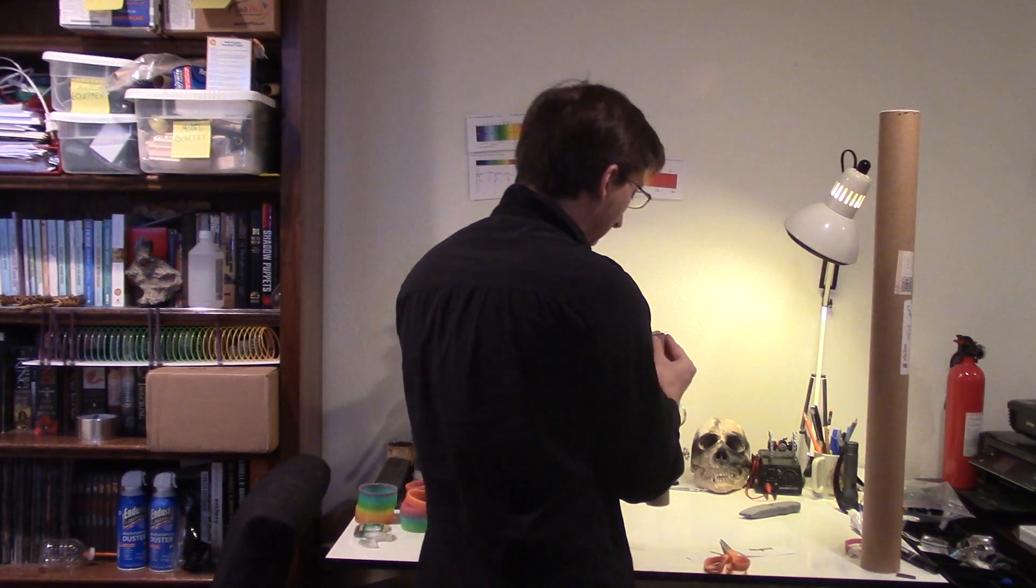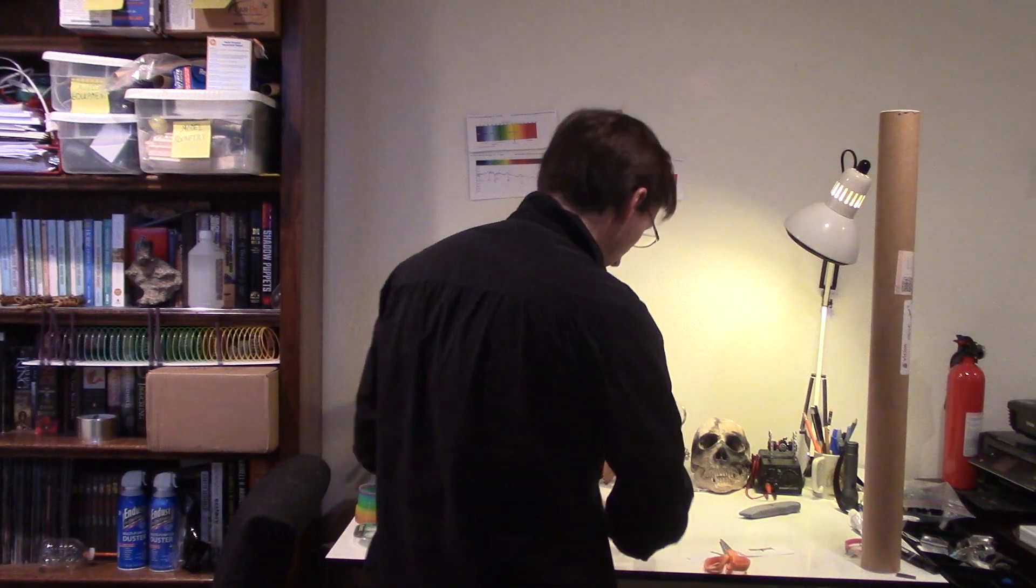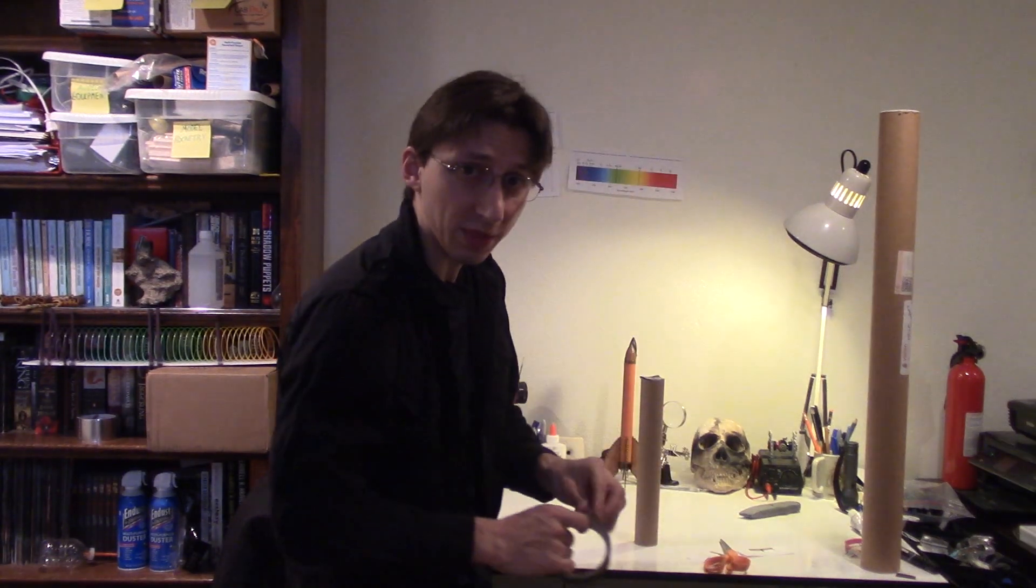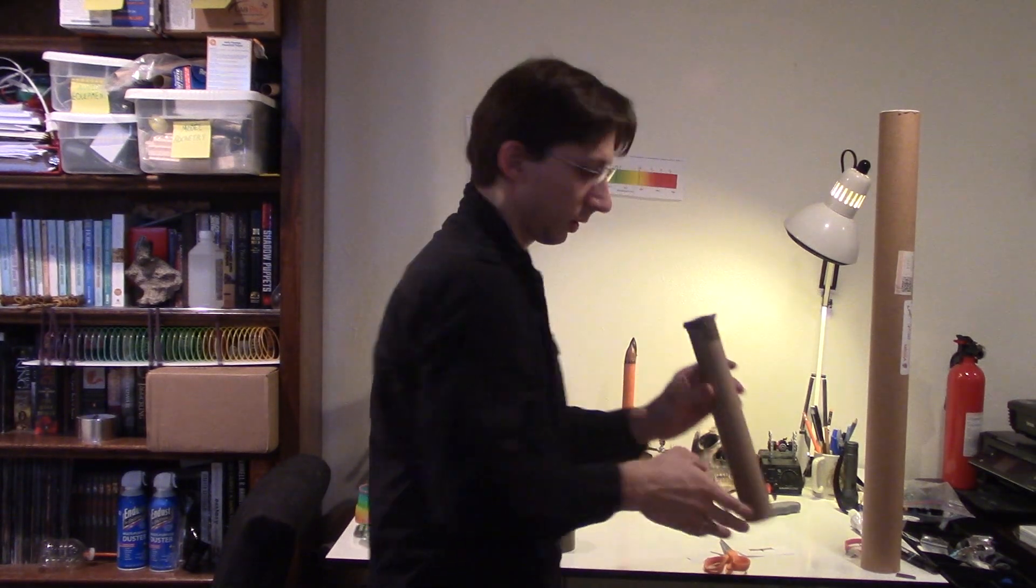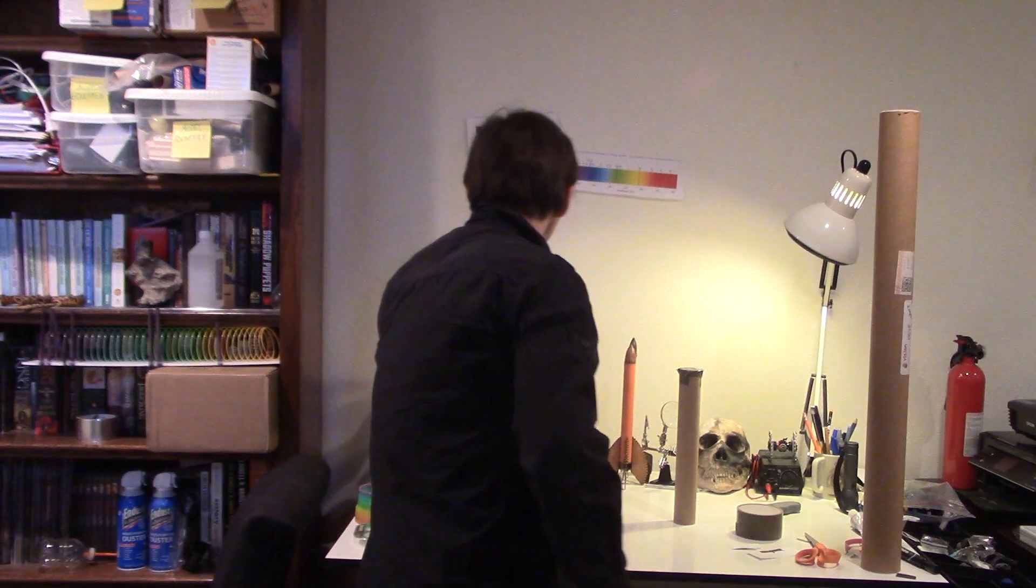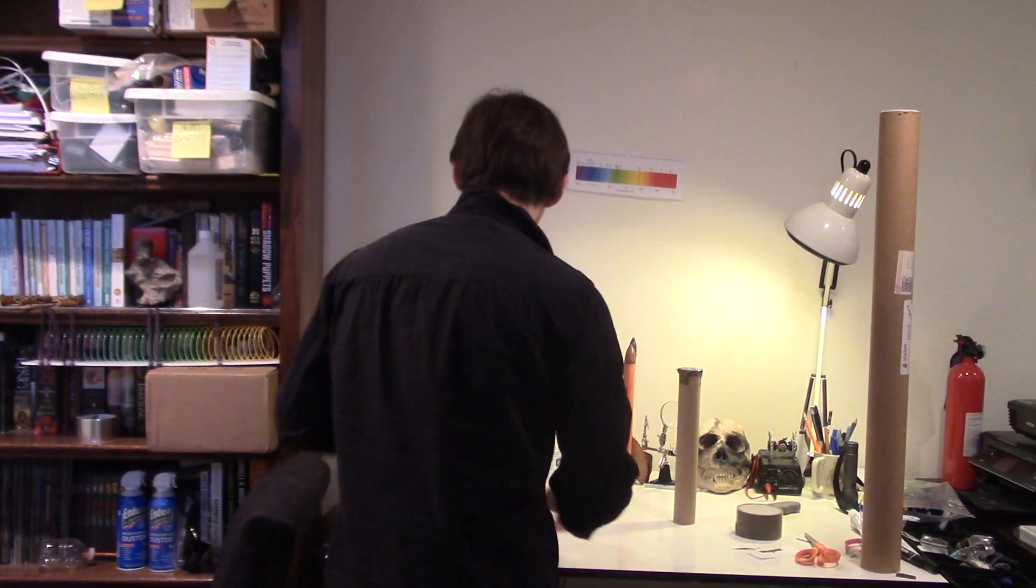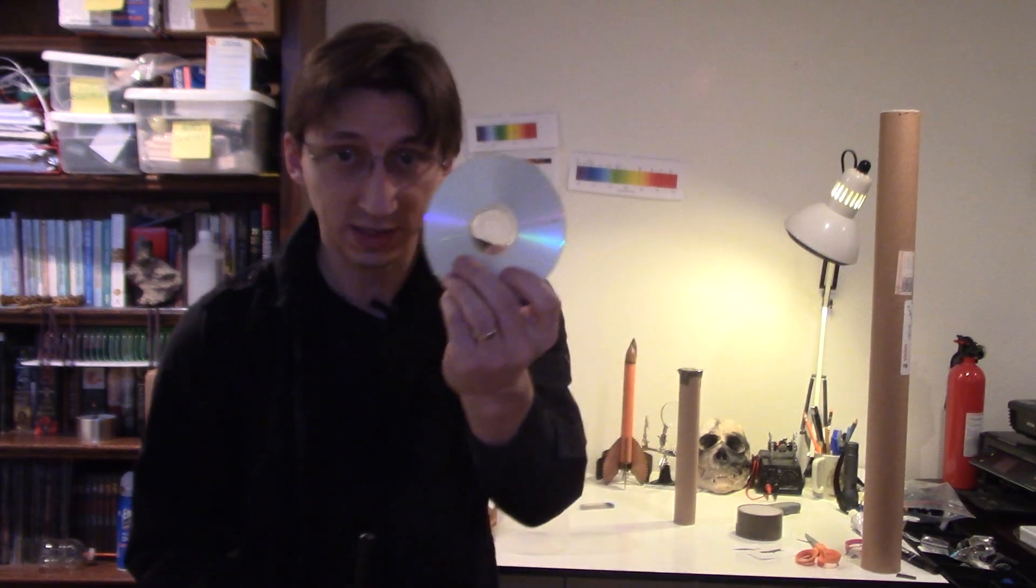Now I'm using opaque tape so that light doesn't creep in around the edges because you want to make sure that the only light that comes through is through that slit, like so. And on the other side, you're going to need to get a diffraction grating. For our diffraction grating, we're going to use a CD.